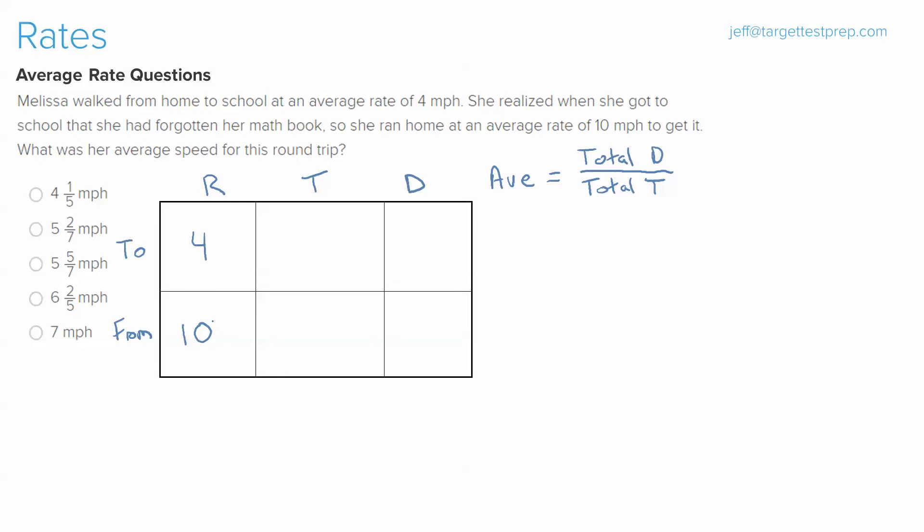Well that may be true, but there is one very special component that many of the average rate problems have in them, and that's that generally, unless explicitly stated, the route that they're taking to the destination is the same route that they're taking from the destination, meaning the distance that she's going from home to school is the same as school to home. So this gives us an option, and we can plug in any sort of real number we want for distance, or we can just plug in a variable like x.